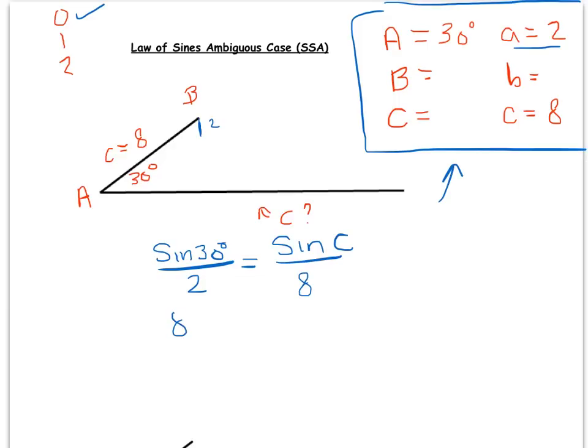So you say, okay, well that means it's sine of 30 divided by 2 is equal to sine of angle C divided by 8. You cross-multiply to start solving. And so watch what happens when you get towards an answer. So this means that sine of C equals, and 8 times sine of 30 divided by 2, if we put that in the calculator, gives us 2.